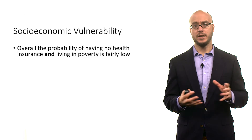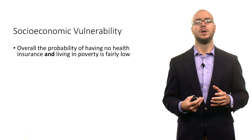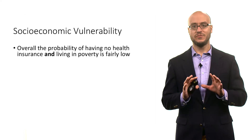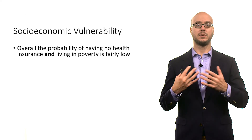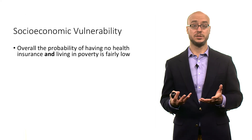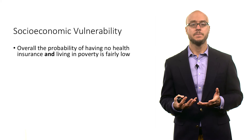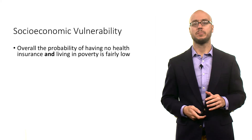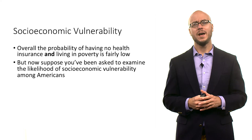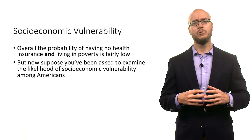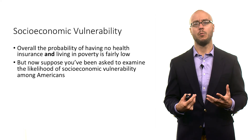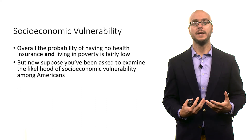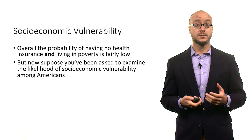But suppose you want to create a different measure of overall socioeconomic vulnerability. You might say, overall, the probability of having no health insurance and living in poverty is fairly low. From a policy standpoint, it's probably too high, but it's still 0.09 — that's the joint probability. But we might take a broader perspective about what it means to be vulnerable in a socioeconomic way for Americans.